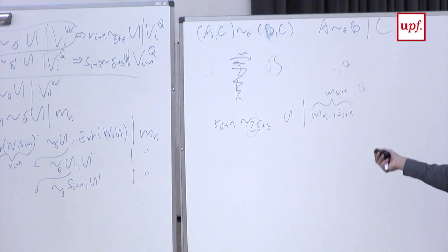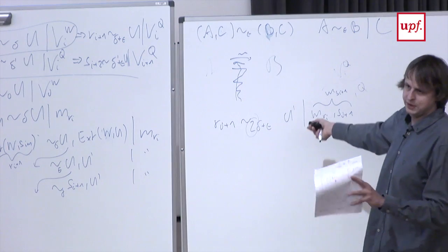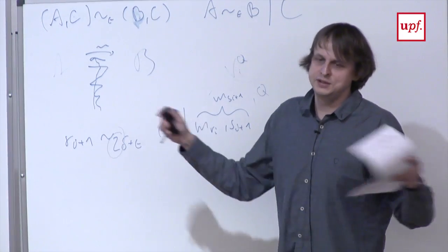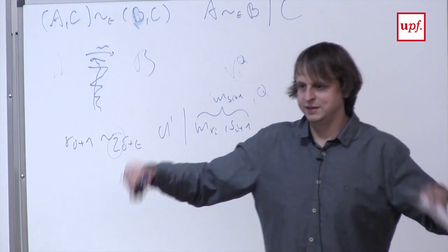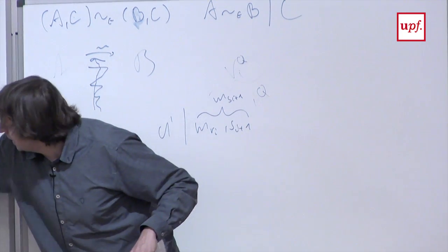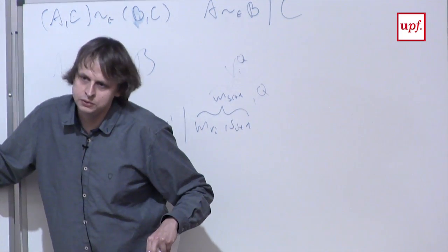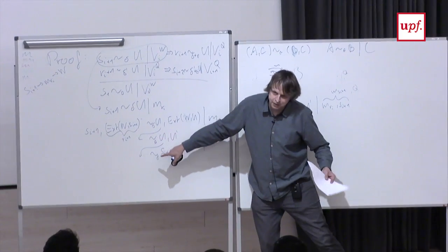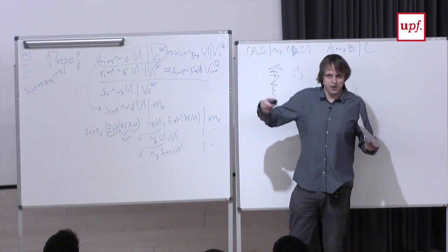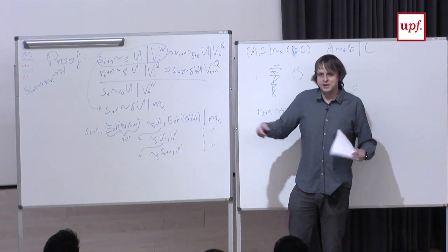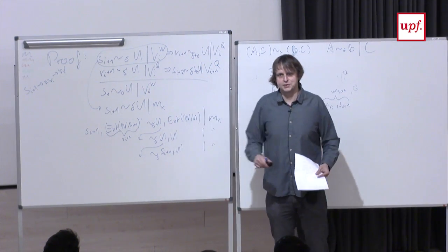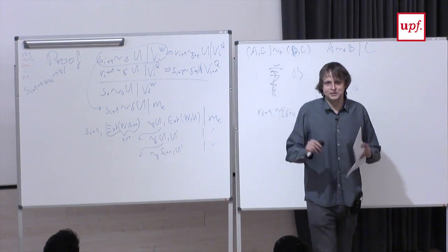The pedestrian way, as I showed, is: replace S with uniform — costs delta; once the seed is uniform, the extractor output is epsilon-close to uniform; replace S back — costs another delta. Total: two delta plus epsilon. Not good. But you can write out the probabilities directly and avoid losing one delta.